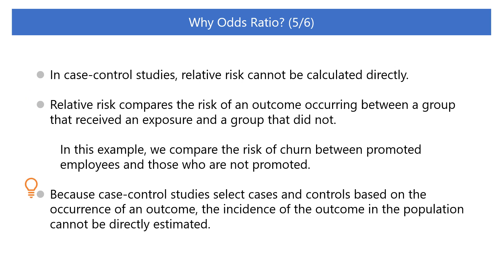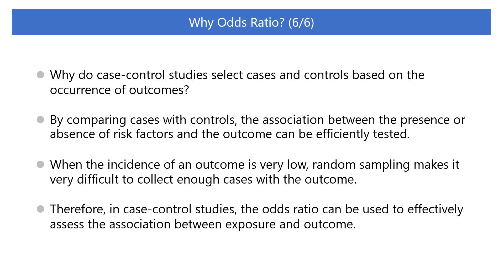However, because case-control studies select cases and controls based on the occurrence of an outcome, the incidence of the outcome in the population as a whole cannot be directly estimated. You may think that we can statistically estimate the incidence of the outcome in the overall population if we randomly sampled participants and then divided them into case and control groups. So, why do case-control studies select cases and controls based on the occurrence of outcomes?